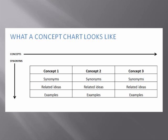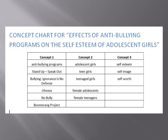At the bottom of the page there's a link to a concept chart you can use. You can also just draw a simple grid on a piece of paper. In your concept chart, which is nothing more than a grid or table, you'll have a column for each of the concepts you identified, so all your concepts will be going across. In each column beneath the concept, you'll write down all the synonyms and related terms you can think of, so all your different words for the same concept will be going down. Here's an example of a concept chart for the research topic: Effects of Anti-Bullying Programs on the Self-Esteem of Adolescent Girls. Notice that there are three columns for three concepts: Anti-Bullying Programs, Adolescent Girls, and Self-Esteem.